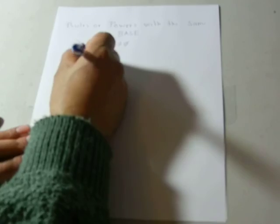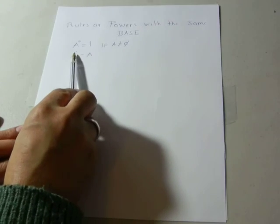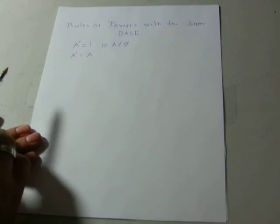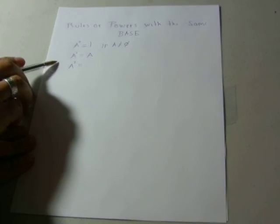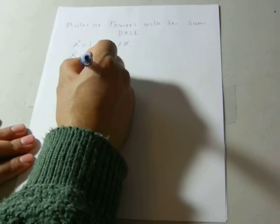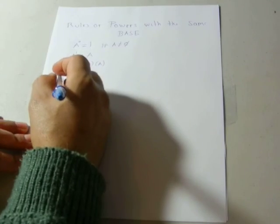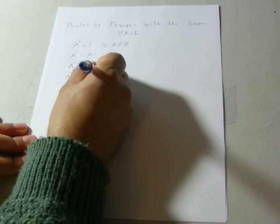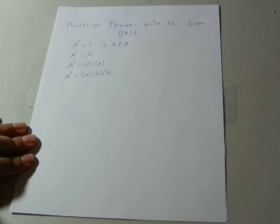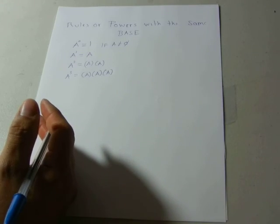In the same way, a to the first power is just the number or variable itself. Usually we write a number without showing the power one, but in reality we are hiding the exponent one that applies to every single number. A to the second power means multiplying that variable by itself: a times a. A to the third power is a times a times a — three times.